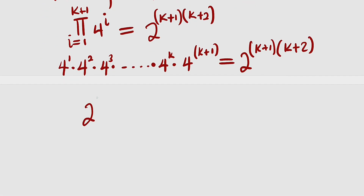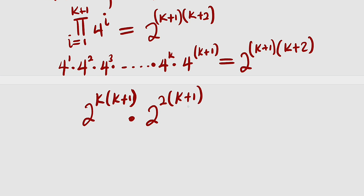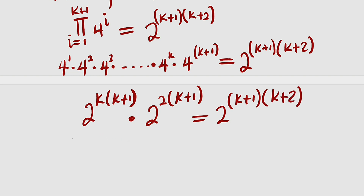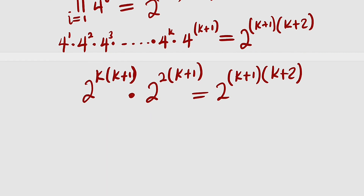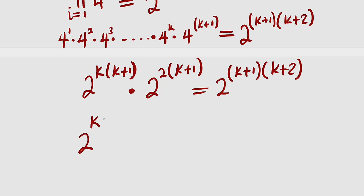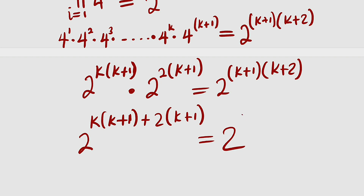So this is the same as 2 to the power of k multiplied by k plus 1, and we still have the remaining factor 4 to the power of k plus 1. Since 4 can be written as 2 to the power of 2, this becomes 2 to the power of 2 multiplied by k plus 1. The right hand side remains 2 to the power of k plus 1 times k plus 2. Observing that the two numbers have the same base, we apply the law of indices: we take one base and add the powers: k(k+1) plus 2(k+1), giving 2 to the power of k plus 1 times k plus 2.